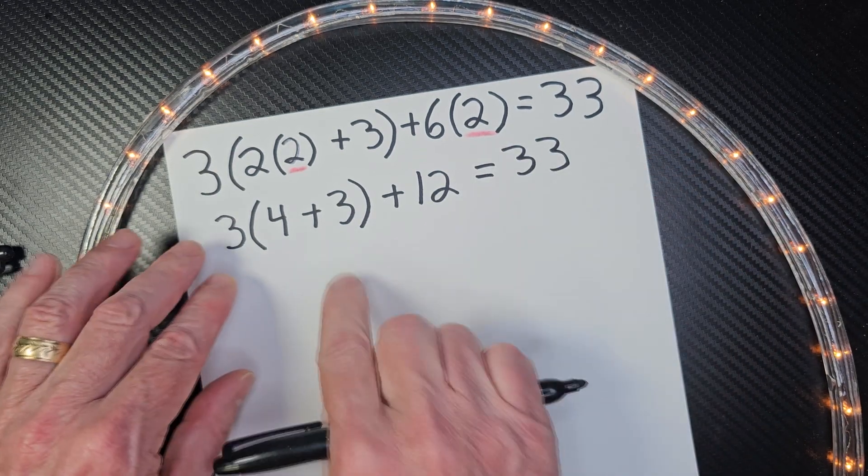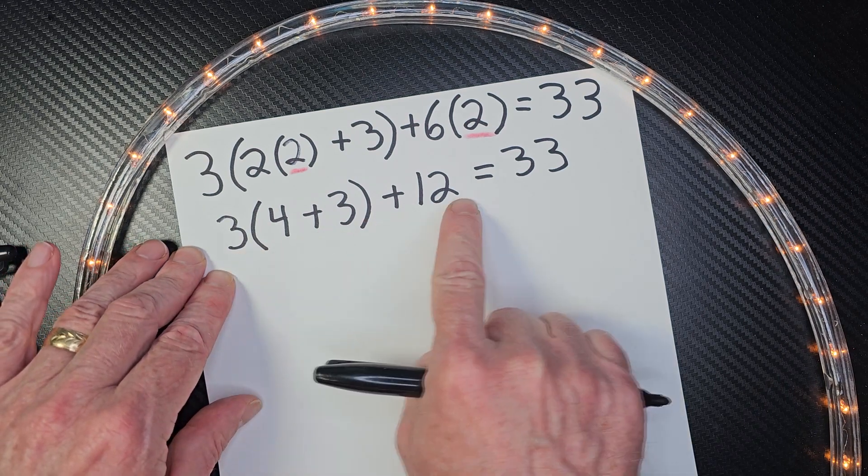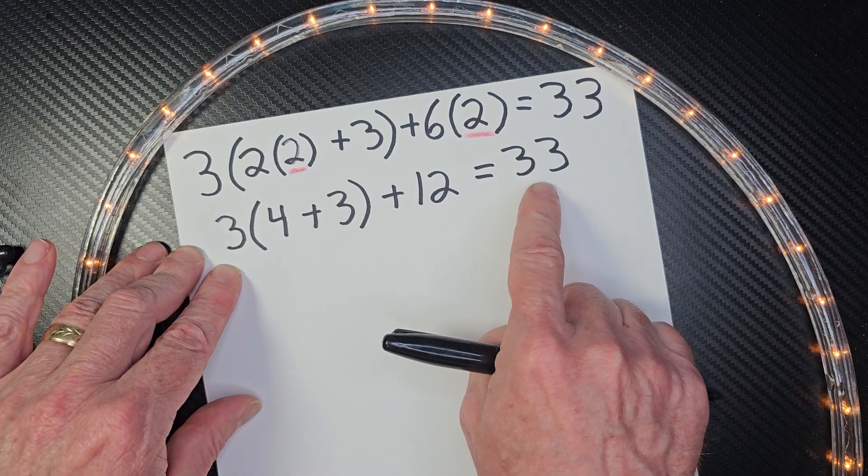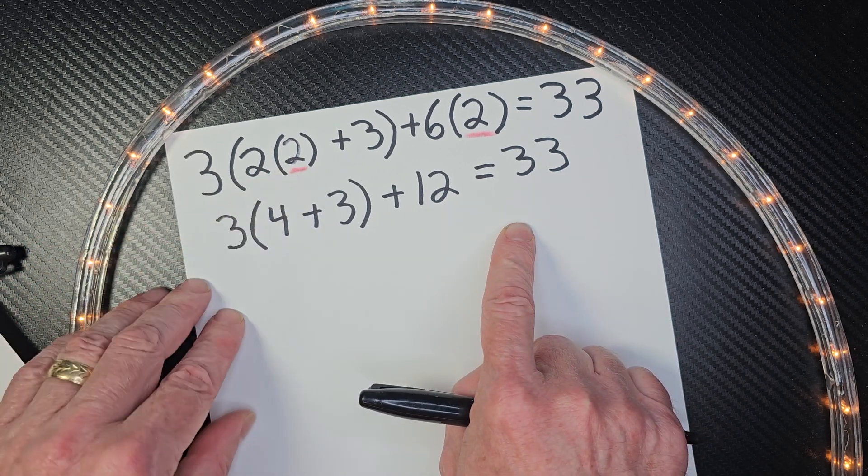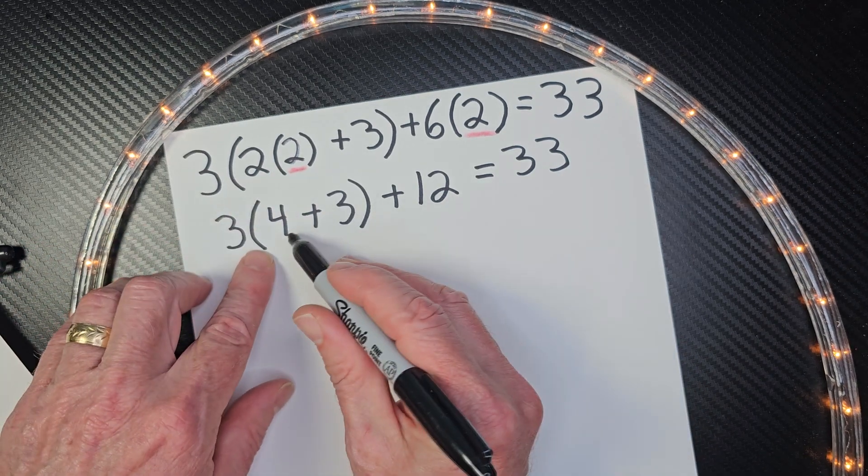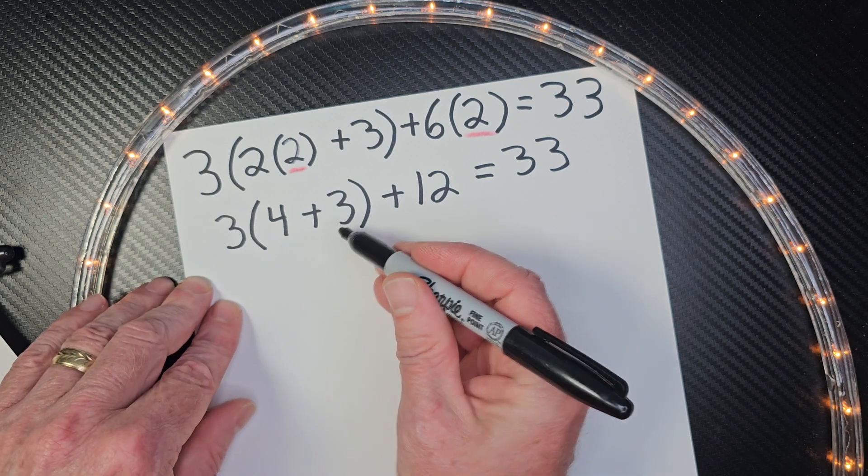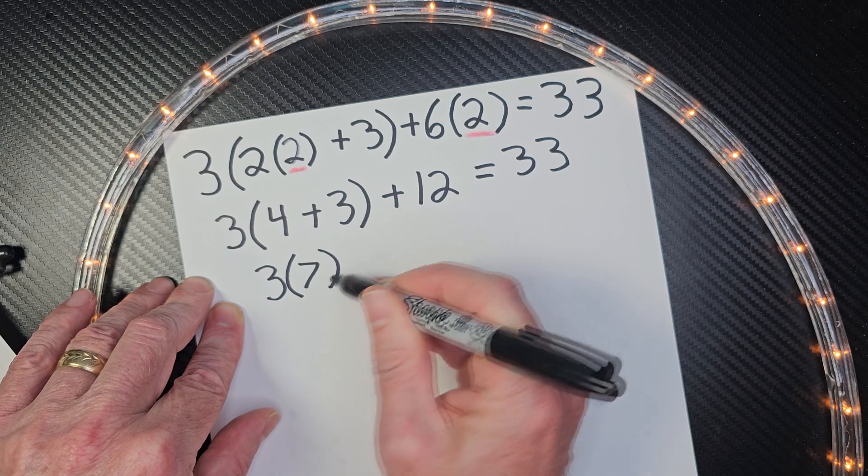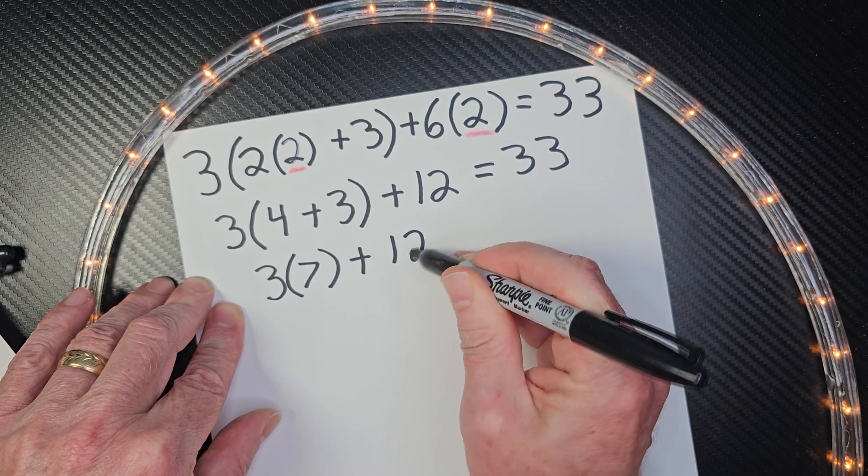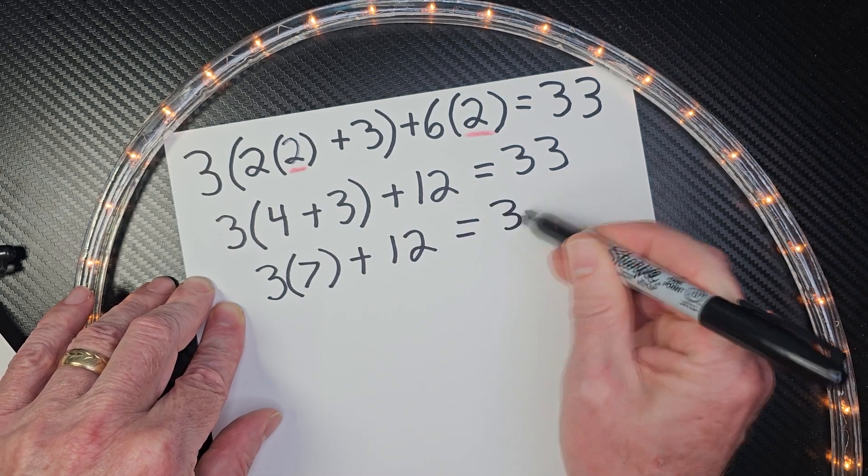Now, whatever the number right here is going to be, it has to match 33, all right, to make that true for Y equals 2. So let's go ahead and finish this. 4 plus 3 is 7. So I'm going to put 3 times 7 plus 12 equals 33.